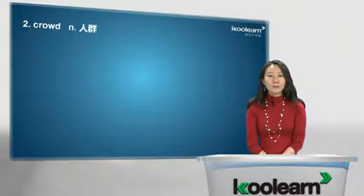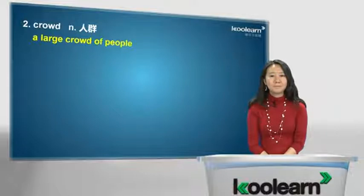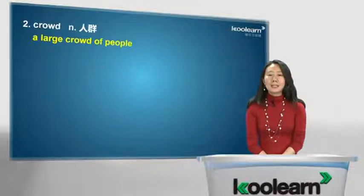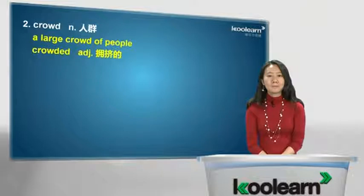我们接着来看下一个单词，crowd。crowd作为名词表示人群。如果想说一大群人，人很多，我们可以用a large crowd of people。一群人站在当中，势必会觉得很拥挤。这个时候如果想说拥挤，我们就可以用crowded，加上-ed把它变成对应的形容词。